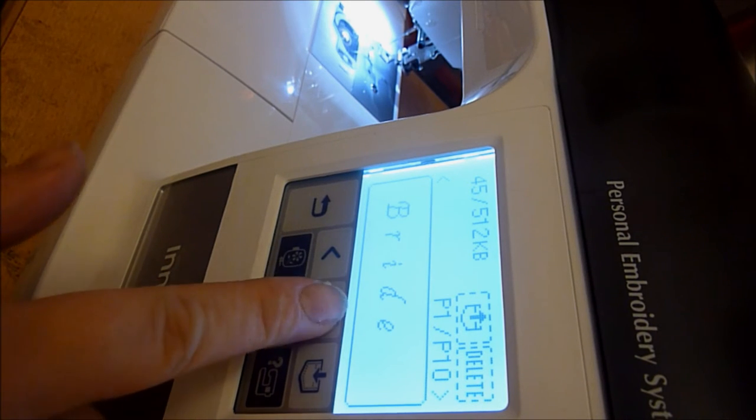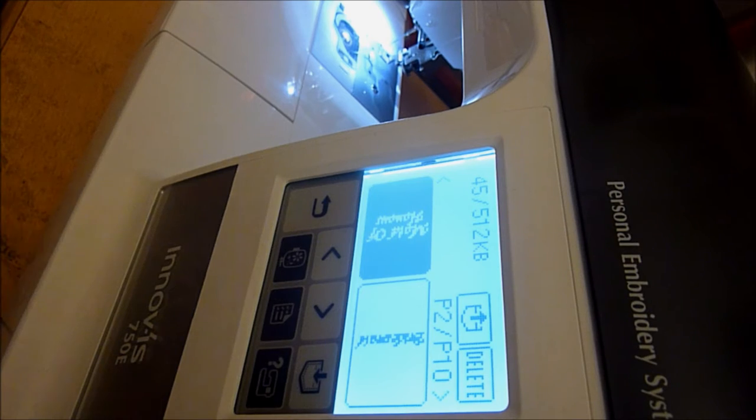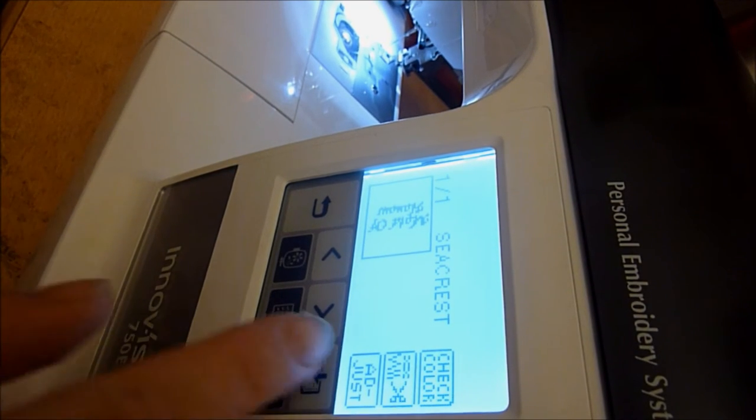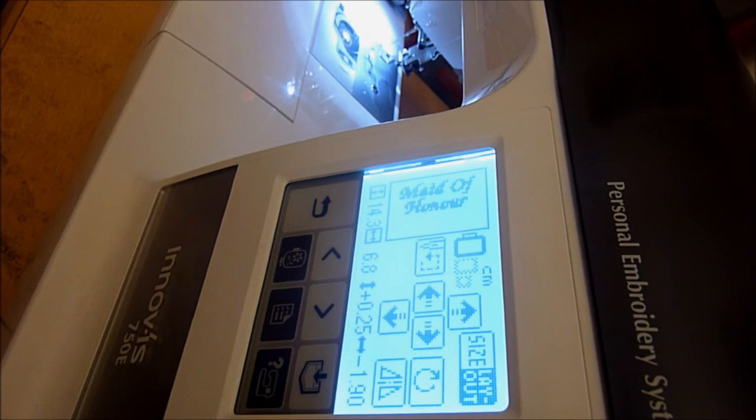And what I want is Maid of Honor, so I select that one and then take that from there. And then I'm just going to check that it's in the right layout for what I want, and that's right, that's how I want it laid out. So the next thing to do is to attach the hoop to the machine.